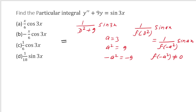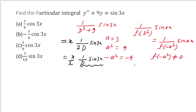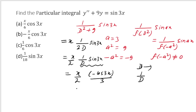In the sin failure case, multiply by x and differentiate D²+9 with respect to D, giving 2D. So PI = x/(2D) · sin(3x). Since 1/D means integration, this equals (x/2) · ∫sin(3x) dx = (x/2) · (-cos(3x)/3) = -x/(6) · cos(3x). Option b, -x/6 cos(3x), is correct.